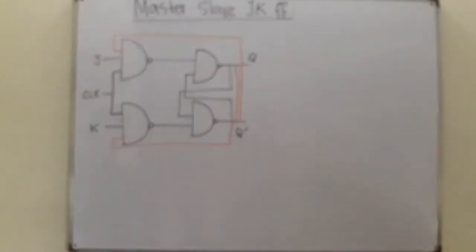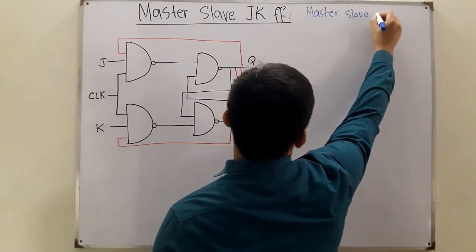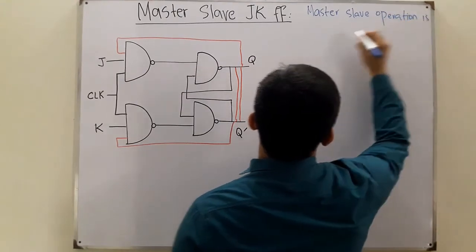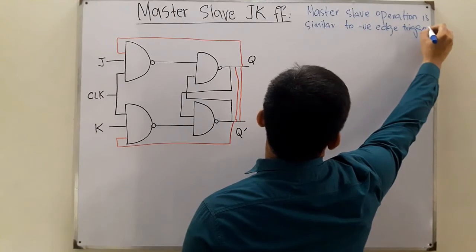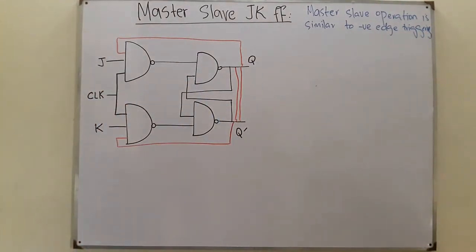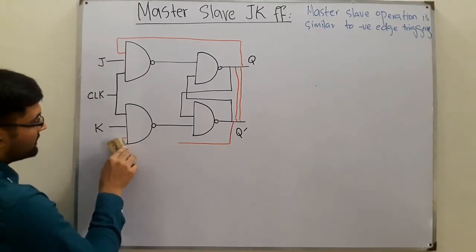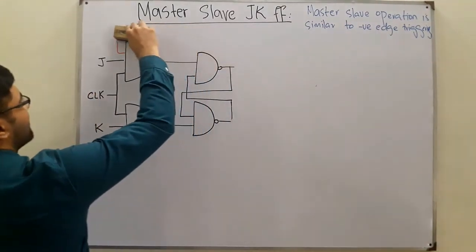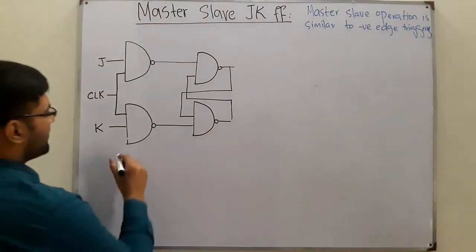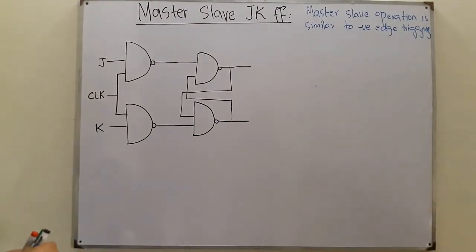The master-slave operation is similar to negative edge triggering. Now, to build this circuit, some changes are needed. The feedback that was provided previously needs to be removed for this particular case. So we remove that feedback part. Instead, we have some more gates.